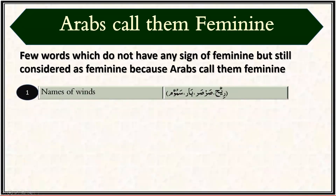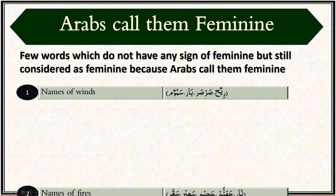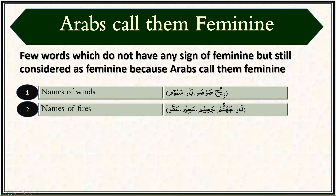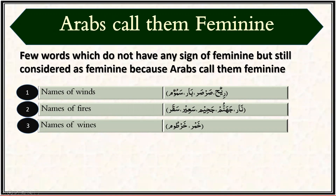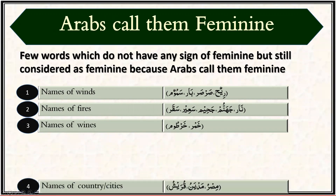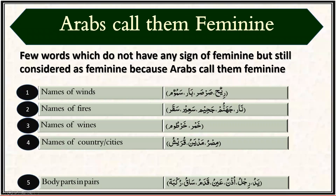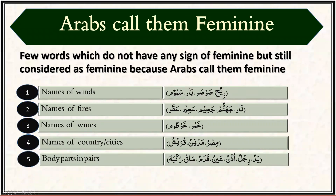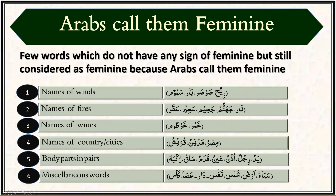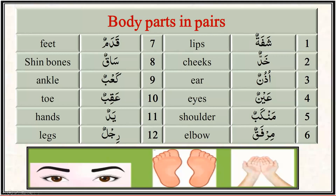The groups are: names of wind used in the Quran are considered feminine, like rihun, sarsar, sarum, sabu'um. Names of fire are also feminine, like nar, jahannam, jaheem, sa'eer. Names of wines are also feminine, like khamrun, khurtumun. Names of countries and cities are also feminine, like misr, madyan, firas. Body parts in pairs are always considered feminine, like yadun, rijlun, uzunun, aynun.